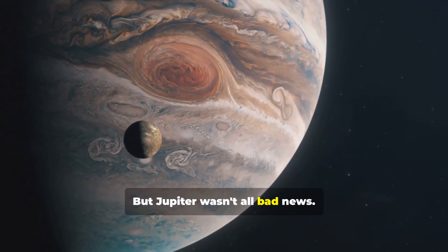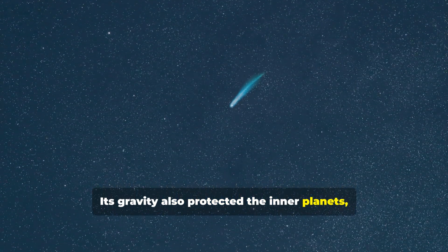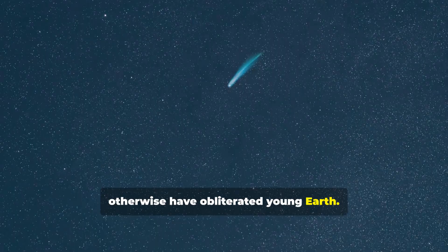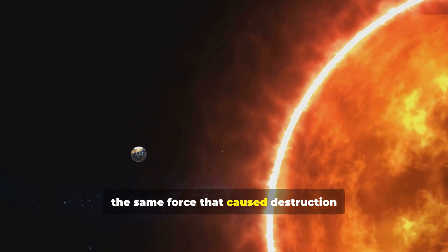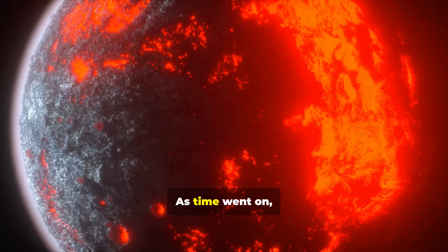But Jupiter wasn't all bad news. Its gravity also protected the inner planets, deflecting comets and debris that might otherwise have obliterated young Earth. In a strange twist of fate, the same force that caused destruction also preserved life's future home.